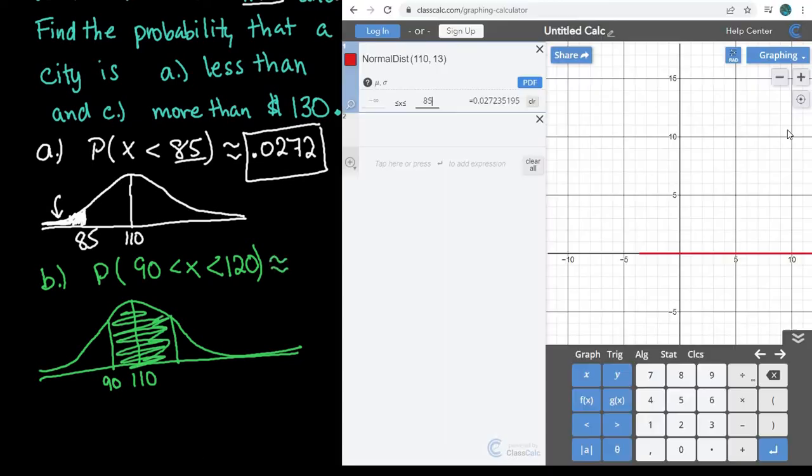Using ClassCalc makes this very simple, because all we have to do is clear out our information, and our lower limit would be 90, and our upper limit would be 120. This would be our answer, so 0.7172 is what we would round to.